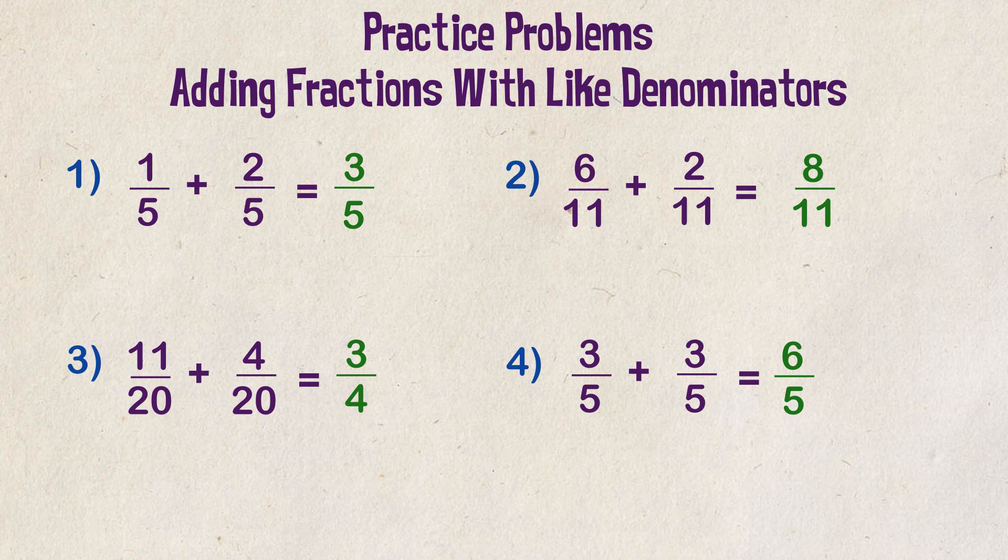Now that's an improper fraction because your numerator is greater than your denominator. If you wanted to convert that to a mixed number instead, you could. Five goes into six one time with a remainder of one, so the mixed number would be one and one fifth.